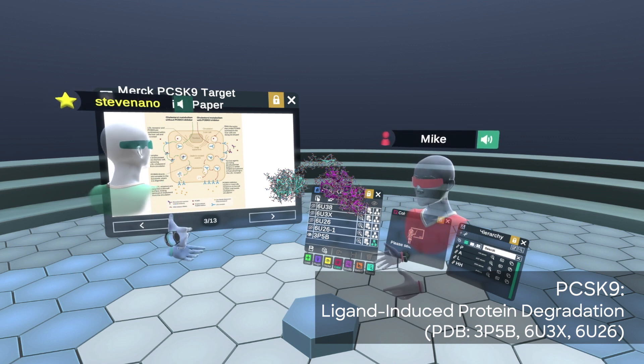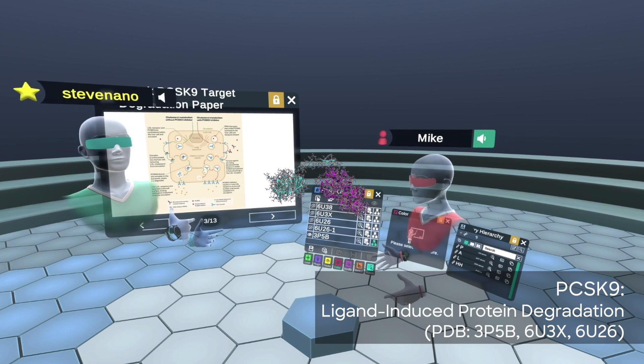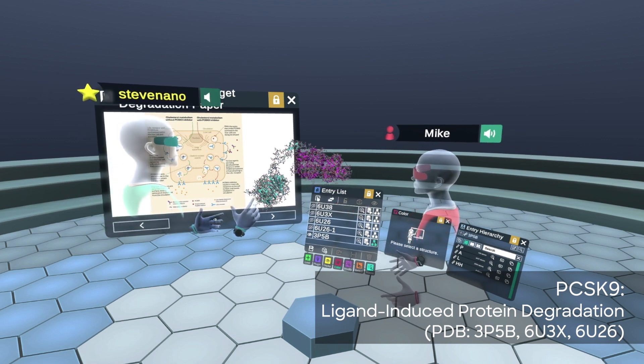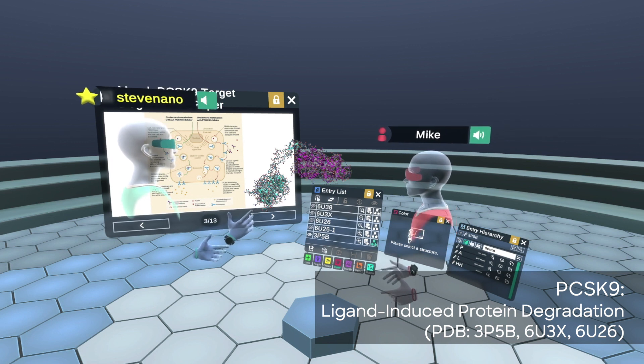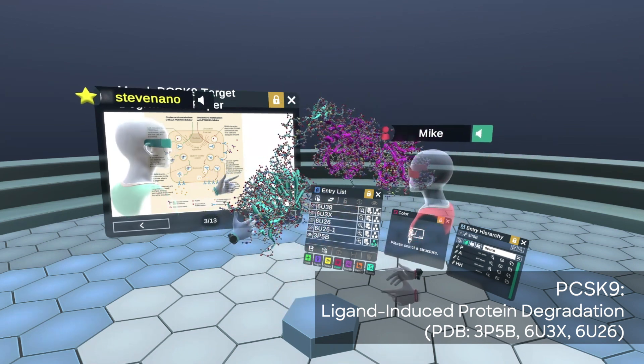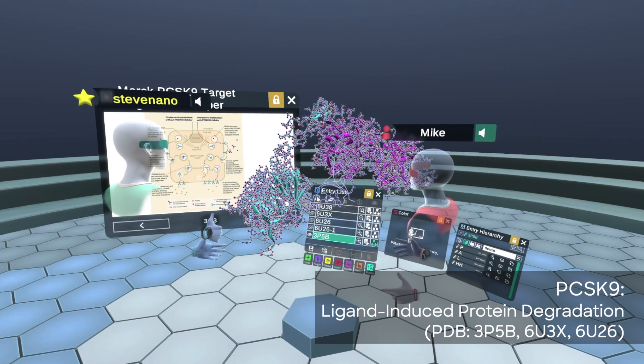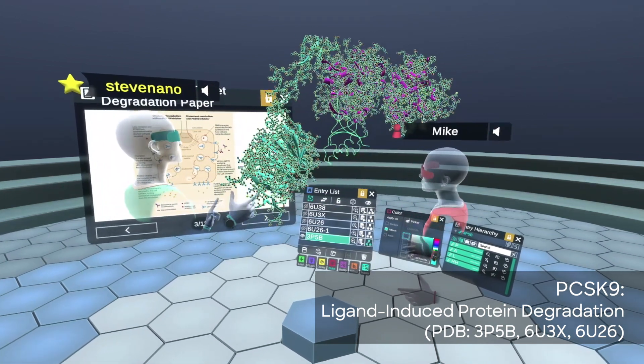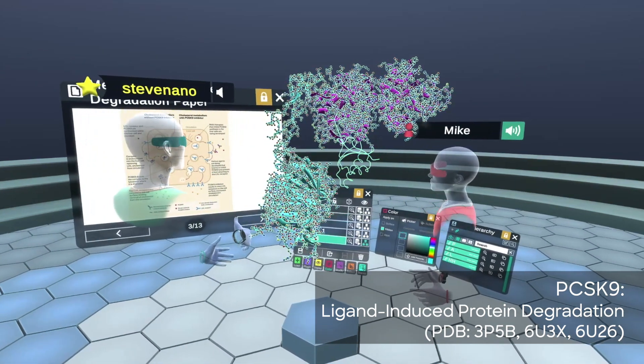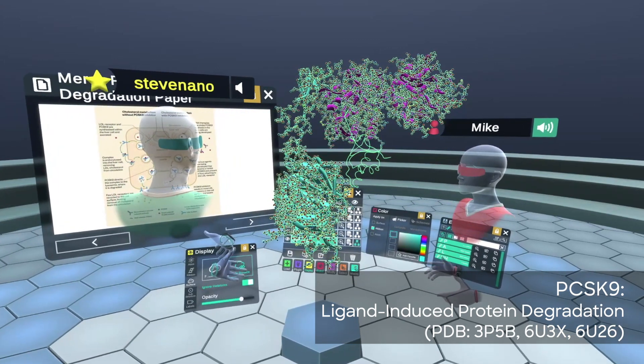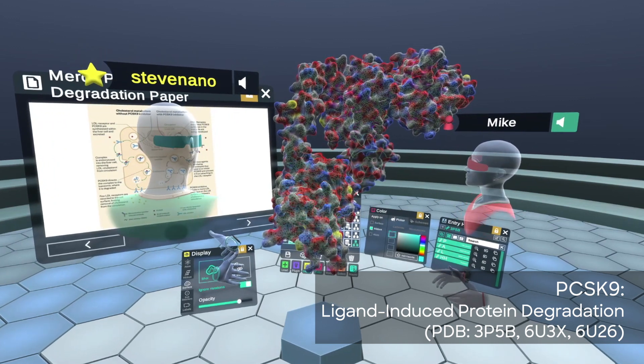PCSK9 is a serine protease, so it's got enzymatic function, but what we're going to talk about today is its protein-protein interaction with the LDL receptor. That's the receptor that helps the body remove LDL cholesterol from the bloodstream. What PCSK9 does is it binds to the LDL receptor and basically causes it to be degraded, so there's less LDL receptor available to remove LDL cholesterol.